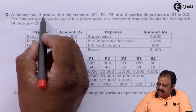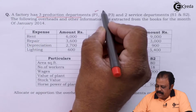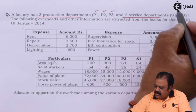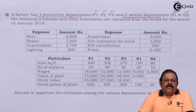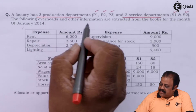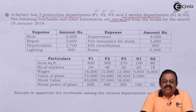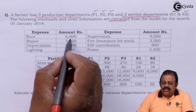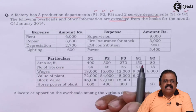A factory has three production departments P1, P2, P3 and two service departments S1, S2 — so in all there are five departments, three production and two service. The following overheads and other information are extracted from the books for the month of January 2014: rent 6000, repair 3600, depreciation 2700, lighting 600.